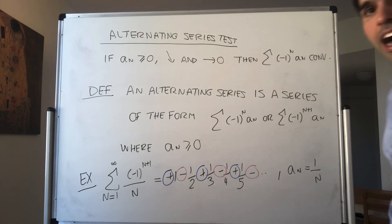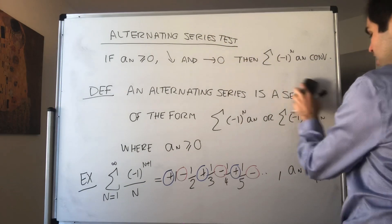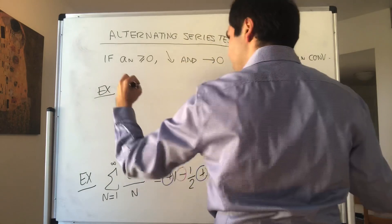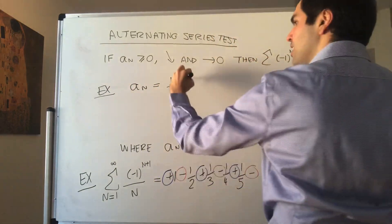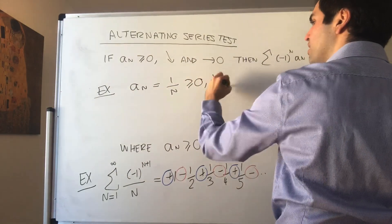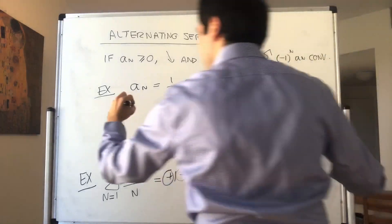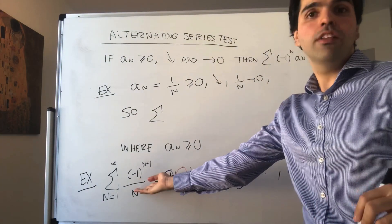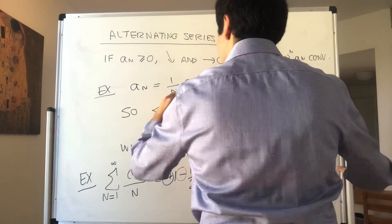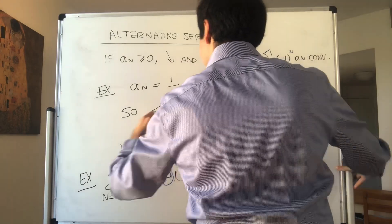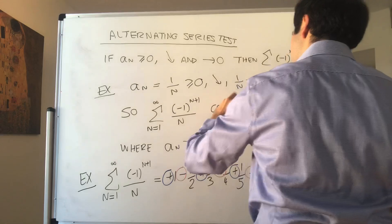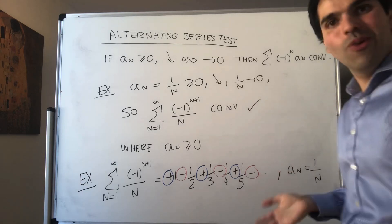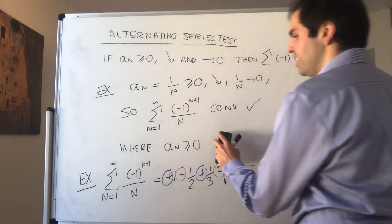For instance, we have a_n = 1/n. Well, it's non-negative, it's decreasing, and 1/n goes to zero. So what this is saying is that the sum of (-1)^n * a_n, or in this case the sum of (-1)^(n+1) / n, this series converges. Under very mild assumptions, which usually hold in the series that we study, we get that the alternating series converges.